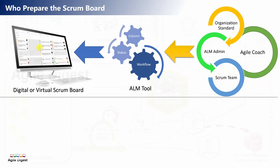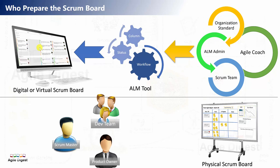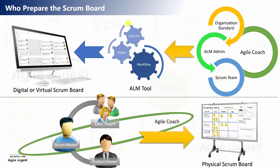In the case of a physical board, if there are organization standards they get implemented, but one board is owned by one team. The team's different roles — development team, Scrum Master, Product Owner — consult with each other and, with their Agile coach, finalize the best board structure based on their nature of work. This board can also be changed by the team after five or six sprints if changes are required.